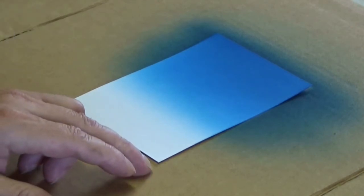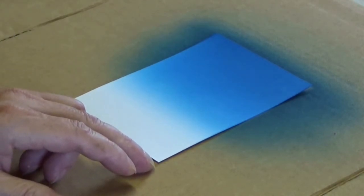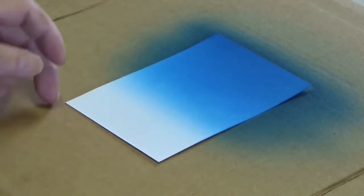In the next step, magenta is brushed from the lower edge to the middle of the painting surface.